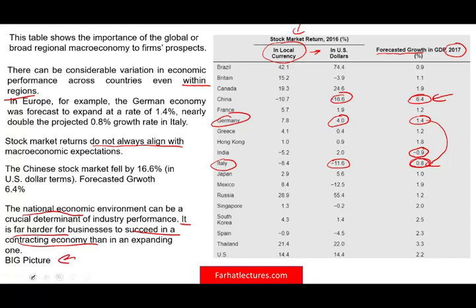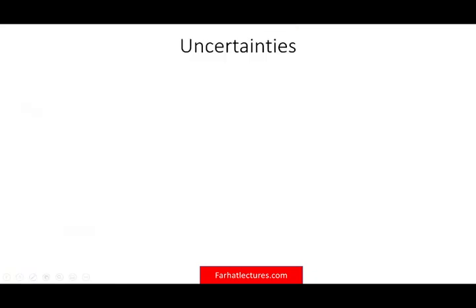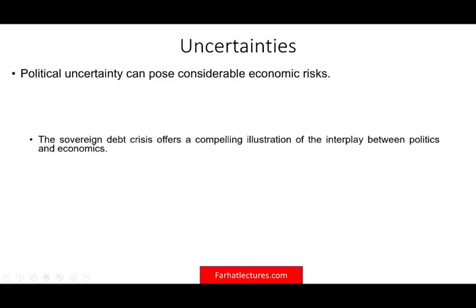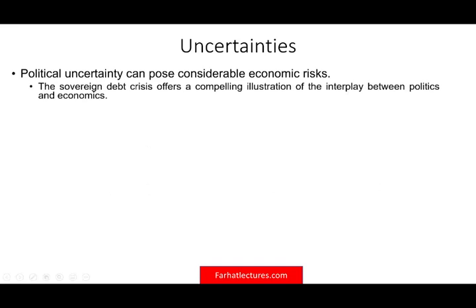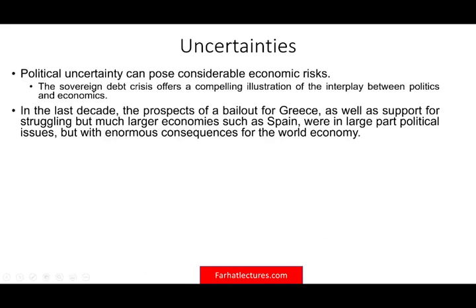Not all countries within the same region perform the same way. When looking at the global economy, there are many uncertainties — one of them is political uncertainty, which affects economic risk. For example, the debt crisis in Greece was really a political crisis: the political parties did not want to reduce debt and kept borrowing money they could not afford. The prospect of a bailout for Greece, as well as support for struggling economies like Spain, were political issues with enormous economic consequences for the whole world.